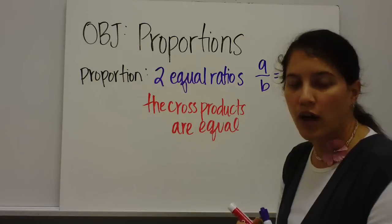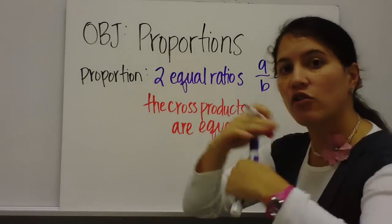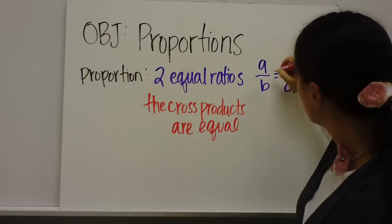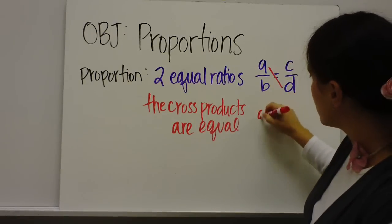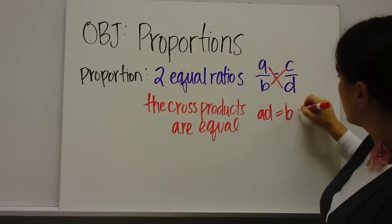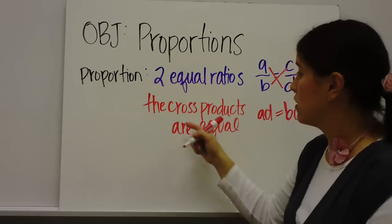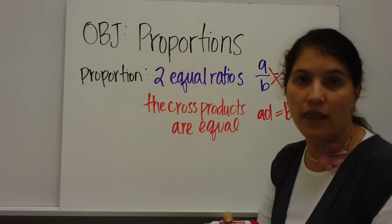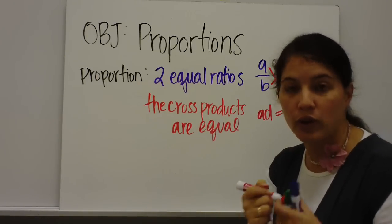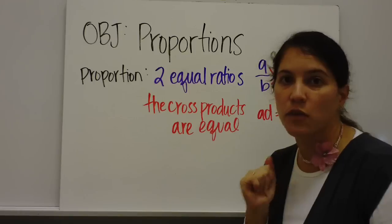Another thing about proportions is the cross products are equal. So let me explain what that means, cross products. The word products means multiply. So if you were to multiply across crossways, that means A times D would equal B times C. So cross products are equal. That's a big key to how to work with proportions and solve proportions.